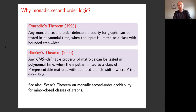The matroidal version of this theorem is due to Hliněný: if you have any CMSO definable property of matroids, that can be tested in polynomial time, as long as you limit the input to a class of F-representable matroids with bounded branch width, where F must be a finite field. Mike, Daryl, Geoff and I have been able to extend Hliněný's theorem to some other natural classes of matroids.